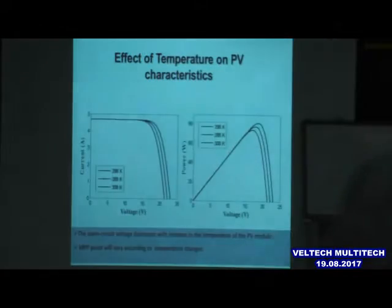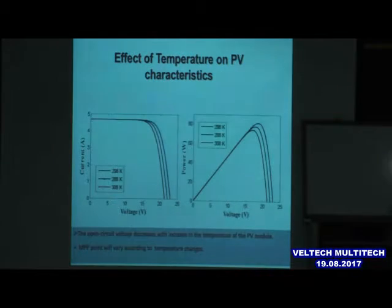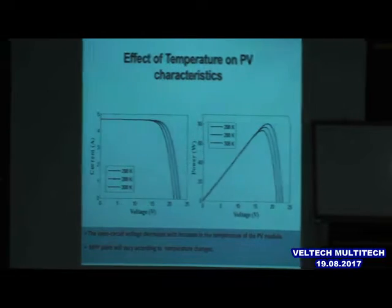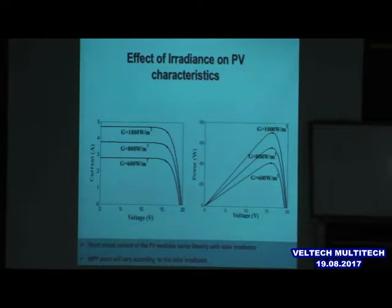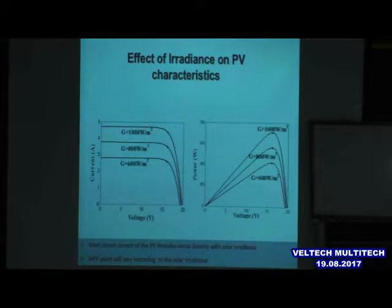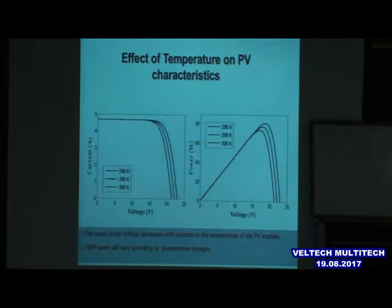So this is what I want to tell you: when there was a change in temperature, the delta P is around 5 watts, only varying between 75 to 80 watts, the change in power is only 5 watts. Whereas when there was a change in insulation, the power changes from 40 to 80. How much we gain and how much we spent — if we are getting some power to do this, the net power will be lost.